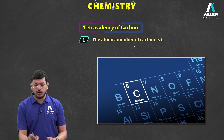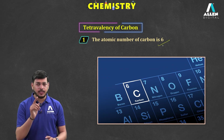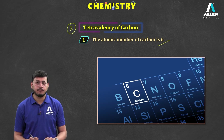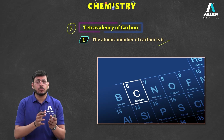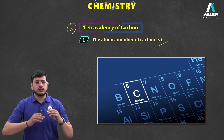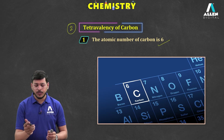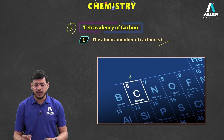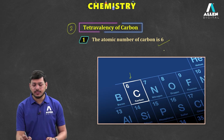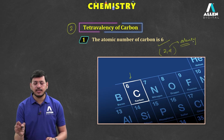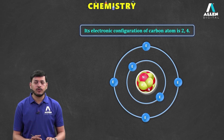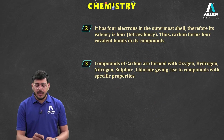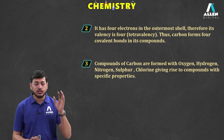The second reason for carbon's versatility is the tetravalency of carbon. The atomic number of carbon is six, and its electronic configuration is 2, 4. So four electrons are present in the outermost shell, which means the valency of carbon is four — that is tetravalency. Tetra means four.